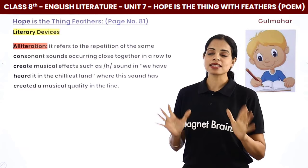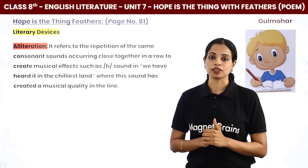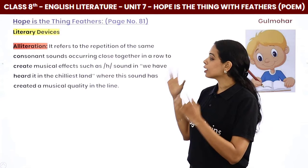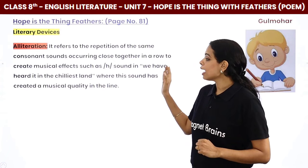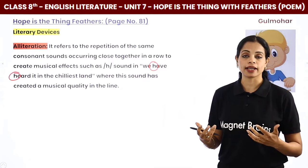Now let's look at the various poetic and literary devices used in the poem. The first is alliteration. Alliteration is the repetition of the same consonant sound occurring close together in a row to create a musical effect. For example: 'I have heard it in the chillest land' — here the 'h' sound repeats: 'have' and 'heard', creating a musical quality in the line.